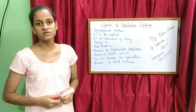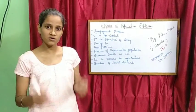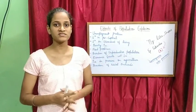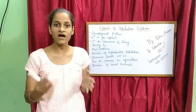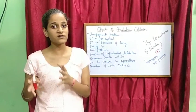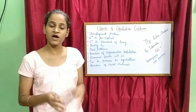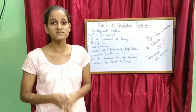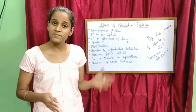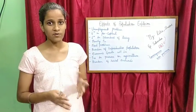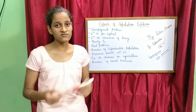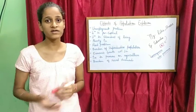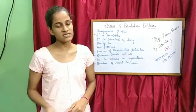The first problem is unemployment. Due to overpopulation, we have limited employment opportunities but more population, so many people are unemployed. Because of this we can see many problems like poverty.